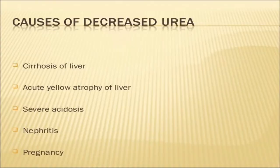Causes of decreased urea include liver damage, cirrhosis, and nephritis. After pregnancy, urea levels may be increased.